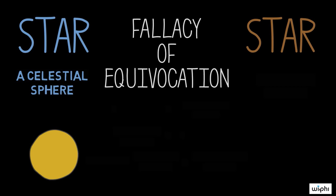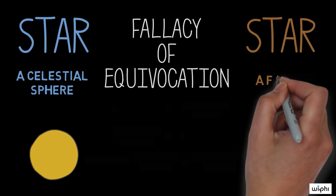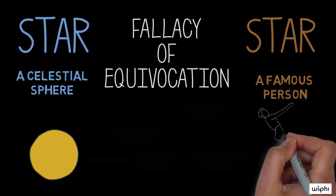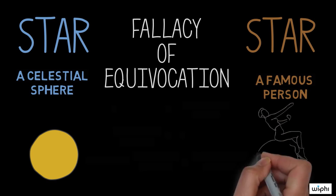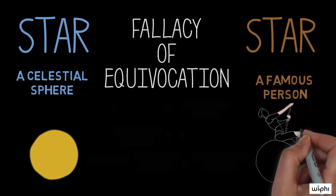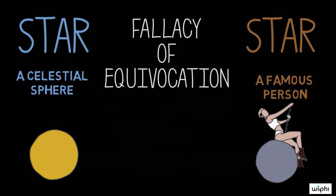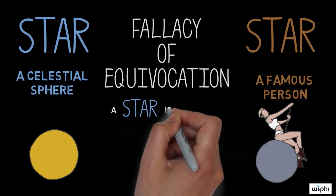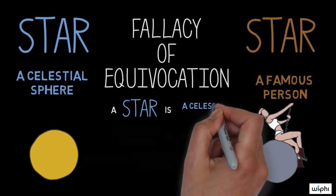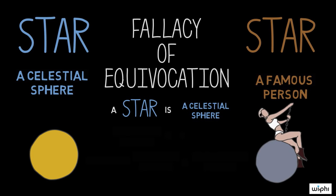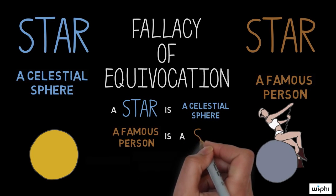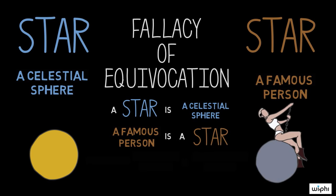But then the meaning of "star" shifts in the second premise, where "star" refers to a famous person. The premises equivocate between two meanings of the word "star." To be precise, equivocation occurs when the same word is used to express different meanings throughout an argument.